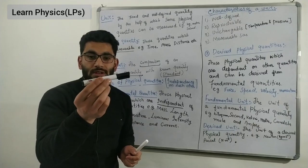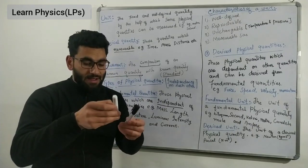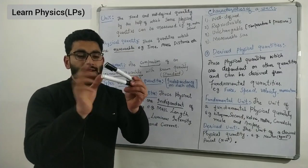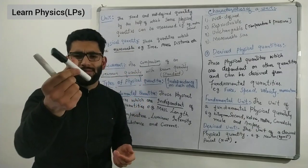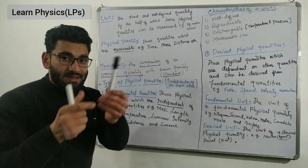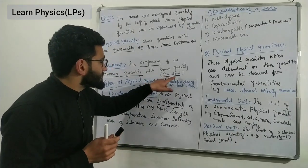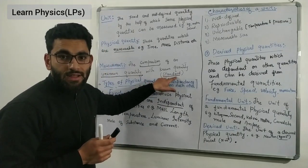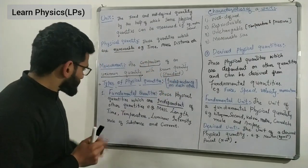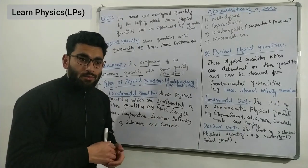For example, to measure this pen, I will bring a scale, coincide the zero mark with one end of the pen, and simply read off the length. Here the pen is the unknown quantity and the scale is the known quantity. This known quantity is also called the standard quantity, and later on we will discuss that it is also given a unit.